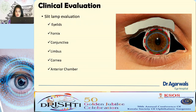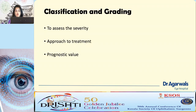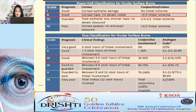Following history taking, we proceed to clinical evaluation. Classification and grading are important to assess severity, guide treatment, and determine prognosis for visual rehabilitation. The Roper-Hall and Dua classification essentially indicates that any condition with more than 30% limbal ischemia carries a guarded prognosis following chemical injury.